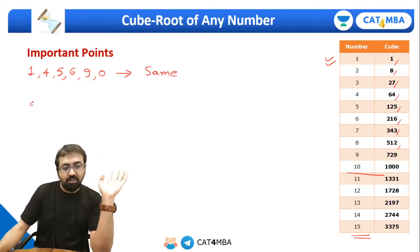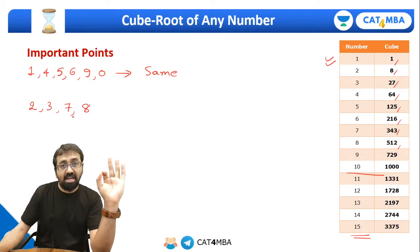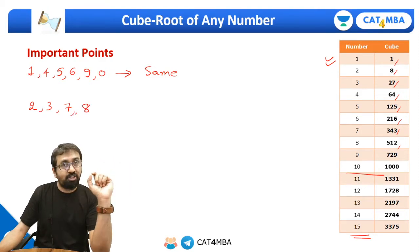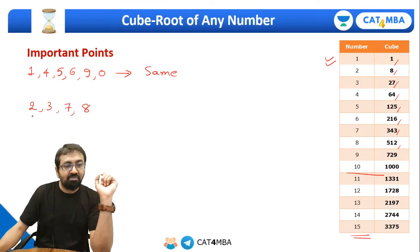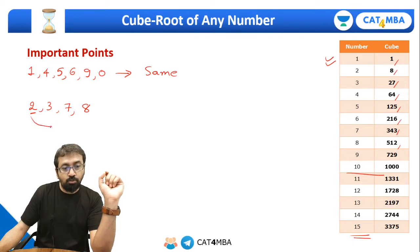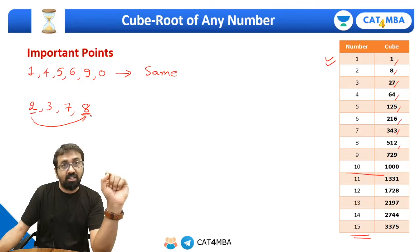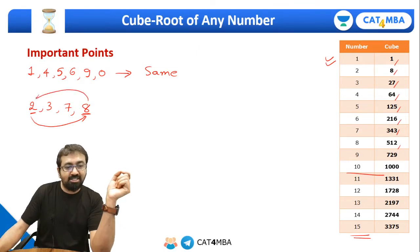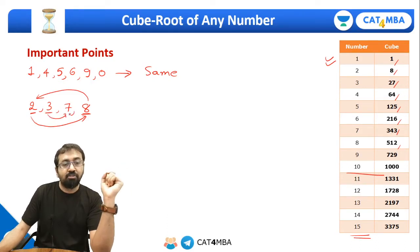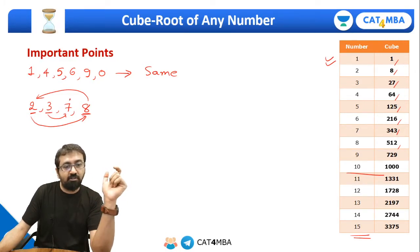If you take any number ending with two, three, seven, or eight, here is a very interesting pattern. If a number ends with two, the last digit in its cube will be eight. And if a number ends with eight, the last digit in its cube will be two. Same way, if a number ends with three, the last digit of its cube will be seven. And if a number ends with seven, the cube of that number will have last digit as three.